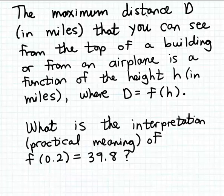This example tells us that the maximum distance D, measured in miles, that you can see from the top of a building or from an airplane is a function of the height of the building or the airplane h, also measured in miles. If we think of converting this statement to mathematical notation, we can use function notation to do that.